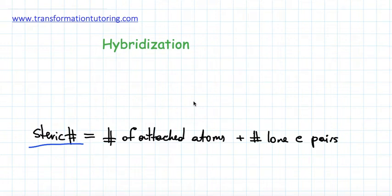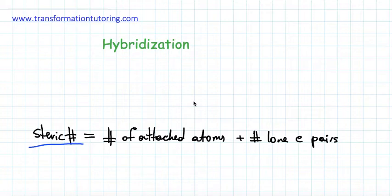In this video, we will learn an easy way of how to figure out hybridization of atoms in a molecule. Hybridization orbital theory was developed because atomic orbital theory could not correctly account for geometries of a molecule. According to hybridization orbital theory, when atoms bond to each other in a molecule, they do so using hybrid orbitals.